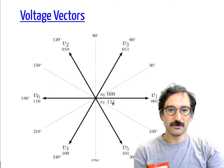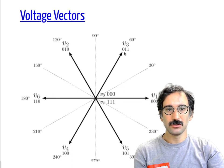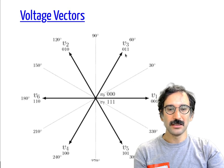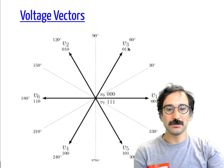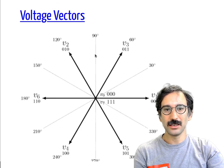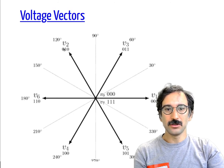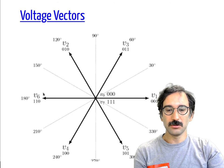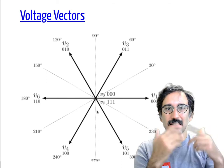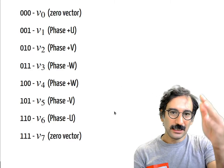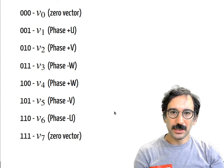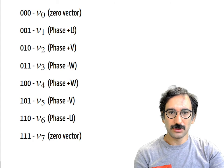The vector names correspond to the numeric binary equivalents: V1 is binary 001, V2 is 010, V3 is 011 (which equals three), V4 is 100 (equals four), V6 is 110 (four plus two equals six), and so on. The arrangement may seem random but it makes sense because each vector name is the numeric decimal equivalent of its binary switching state.